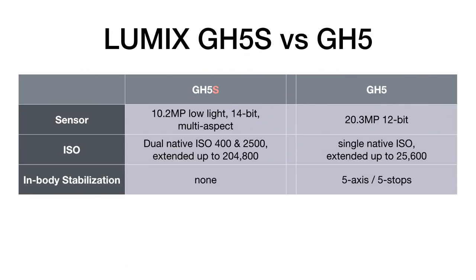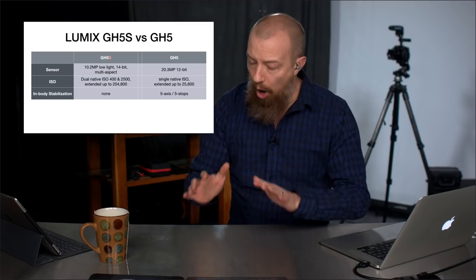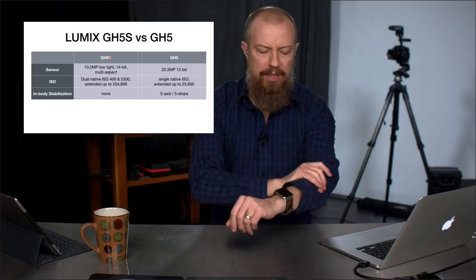In-body stabilization: the GH5S does not have any. The GH5 has five-axis, five-stop stabilization — it's kind of fantastic, a really awesome stabilizer.